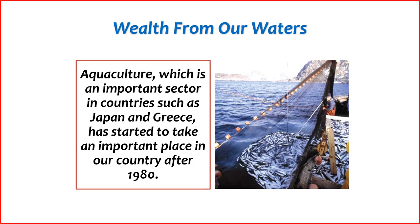Aquaculture in Turkey has witnessed significant growth and development, particularly since the 1980s. This sector involves the cultivation of aquatic organisms, including fish, mollusks, and crustaceans, in controlled environments such as ponds, tanks, and cages. Turkey's geographical location, with access to both the Mediterranean and Black Seas, provides favorable conditions for aquaculture activities. Key points: 1. Species cultivation — the aquaculture sector in Turkey focuses on various species, including sea bass, sea bream, trout, and tilapia. These species are chosen based on their adaptability to local conditions and market demand.